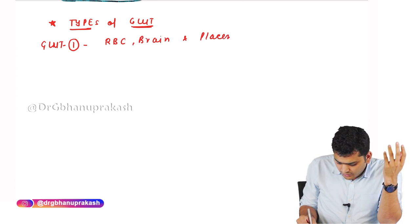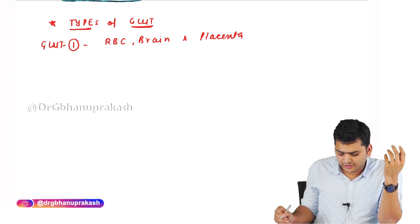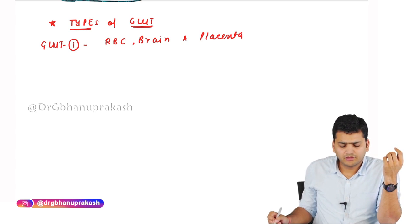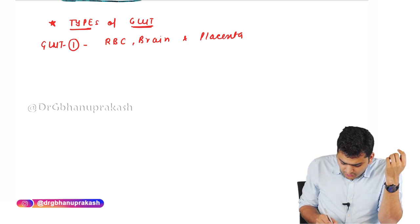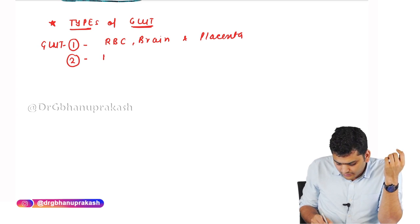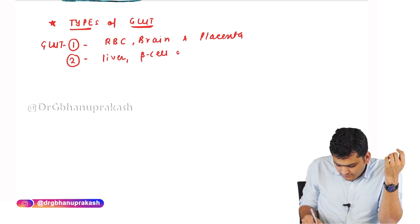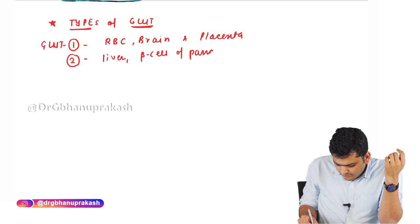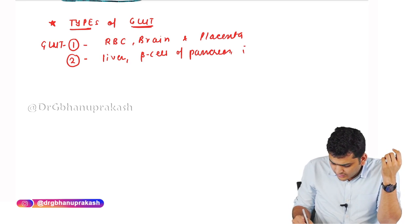GLUT 2 is found in the liver, beta cells of the pancreas, and the basolateral side of the intestine.